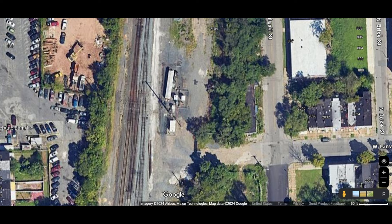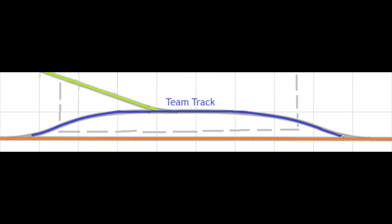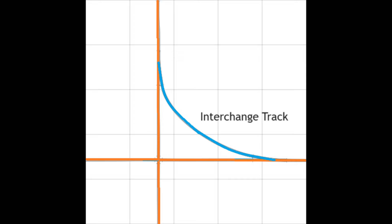Departure tracks: an arrangement of tracks to which outgoing freight cars are switched, usually from the classification yard or directly from the receiving yard, and made ready for train movement. Industrial interchange: the exchange of cars from one railroad to another takes place within the confines of a customer's plant. Interchange track: a track on which freight is delivered by one transportation carrier to another.